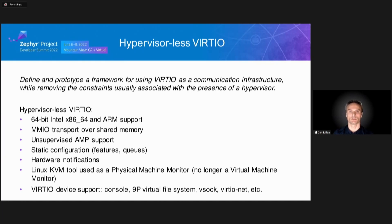The goal of the hypervisor-less initiative is to define and prototype a framework for using VirtIO as a communication infrastructure, while removing the constraints usually associated with the presence of a hypervisor. Hypervisor-less VirtIO runs on ARM and Intel, uses MMIO over shared memory, hardware notifications instead of hypervisor-based notification mechanisms, and a custom VirtIO backend derived from Linux KVM tool, which we call a physical machine monitor. Hypervisor-less VirtIO supports VirtIO console, 9P virtual file system, virtual socket, VirtIO network, and entropy devices.